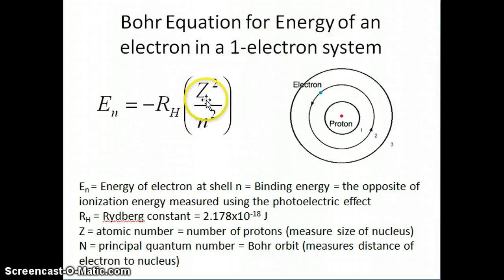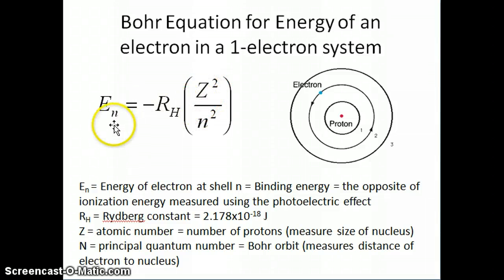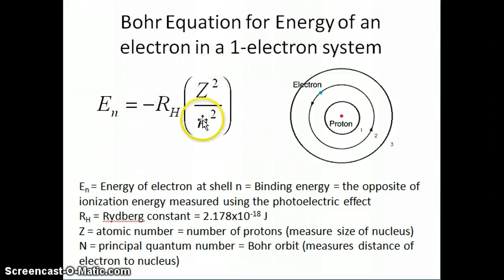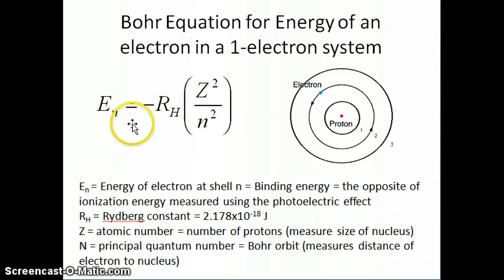If you don't have one proton only — remember that if you only have one proton, this equation just becomes negative R_H times 1 over n squared. And of course, that's the energy of the hydrogen atom.